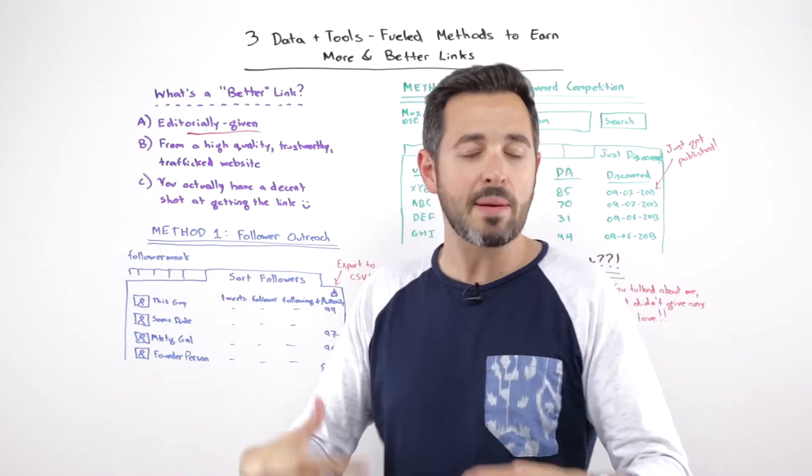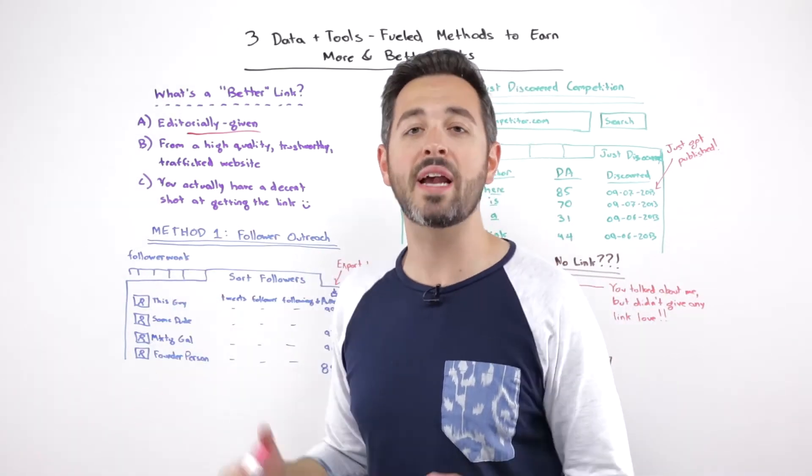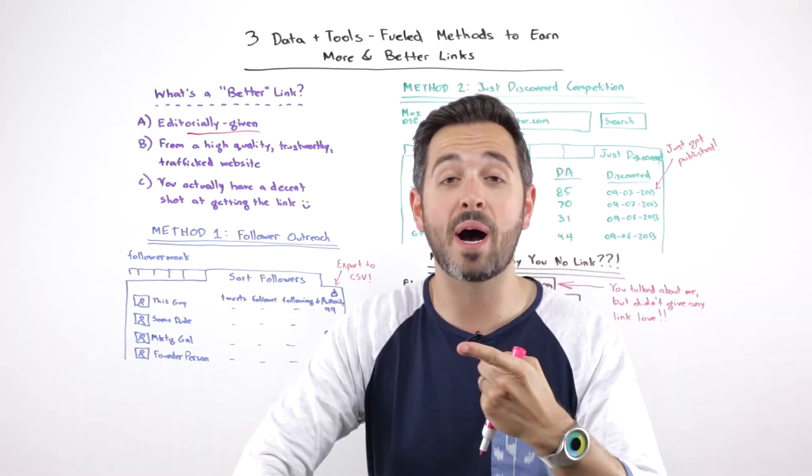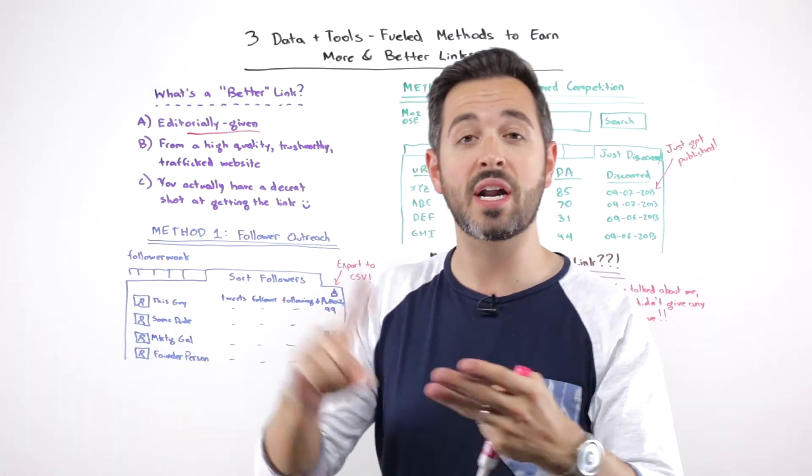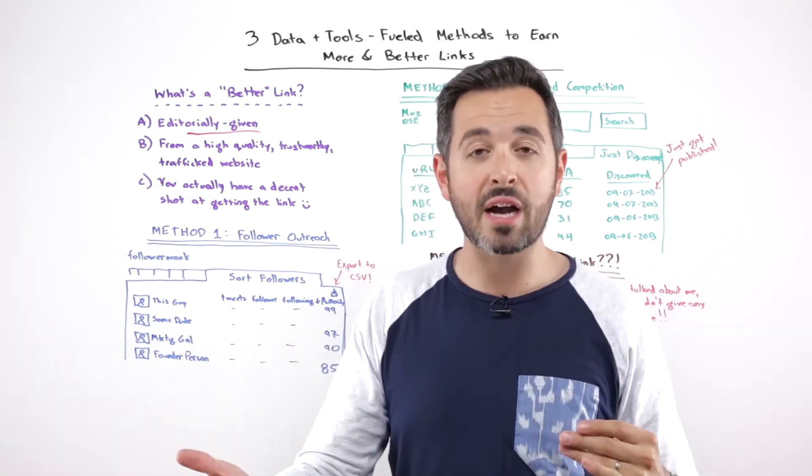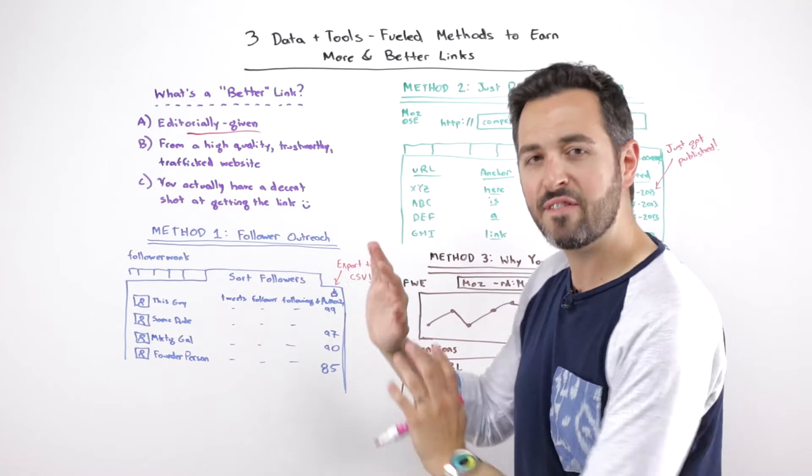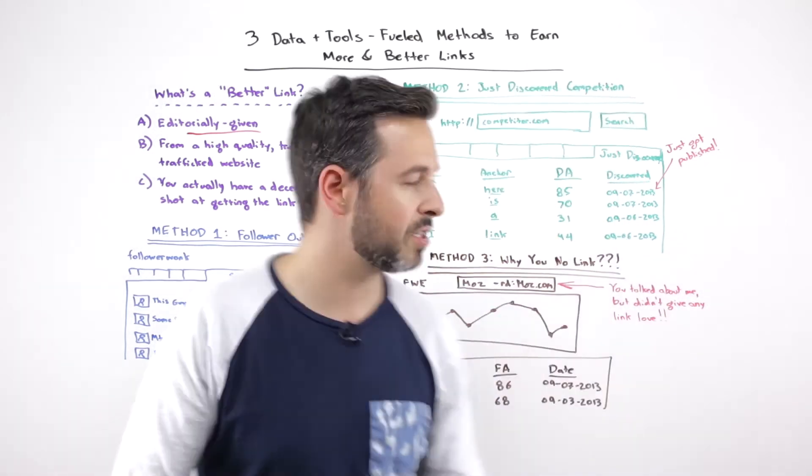They're following my account. That means they care about what I have to say. So if I outreach them, I know something about them too. I've got their bio. I know what site they represent. I know who they are. I can interact with them on Twitter. This works wonderfully. This is one of my favorite outreach methodologies. It starts with social.